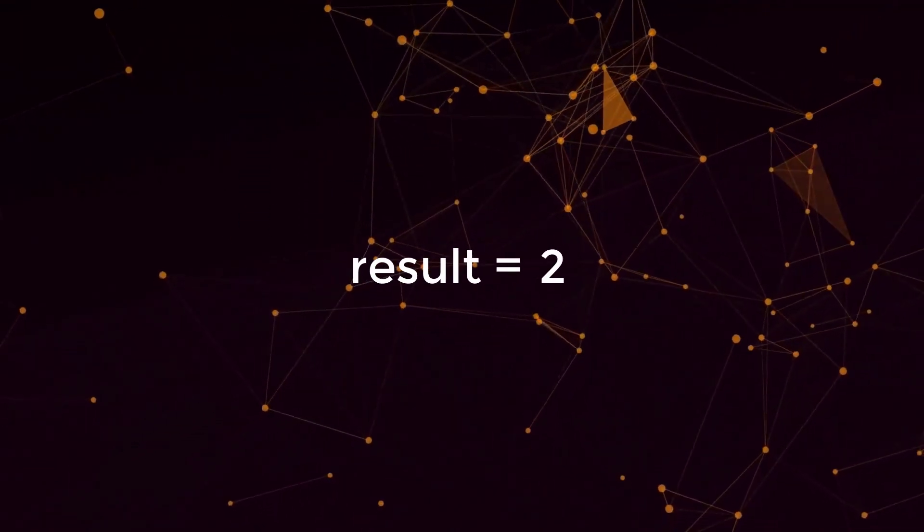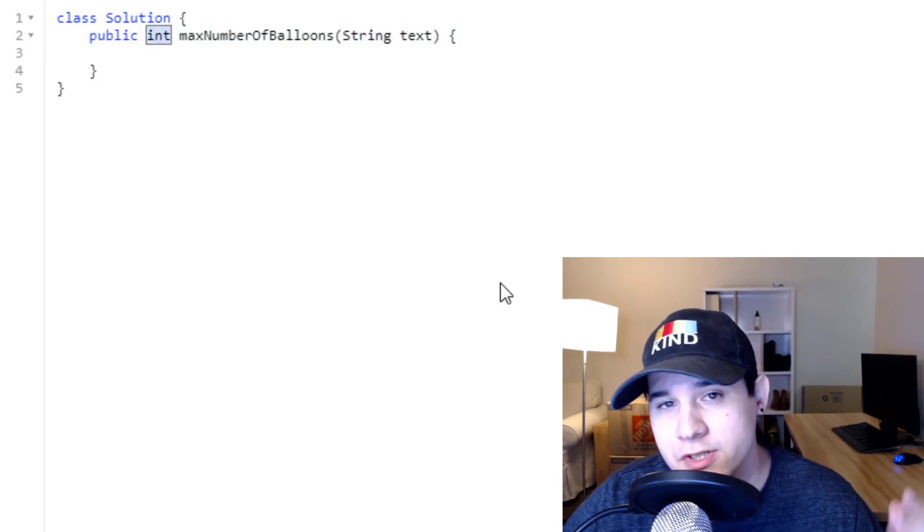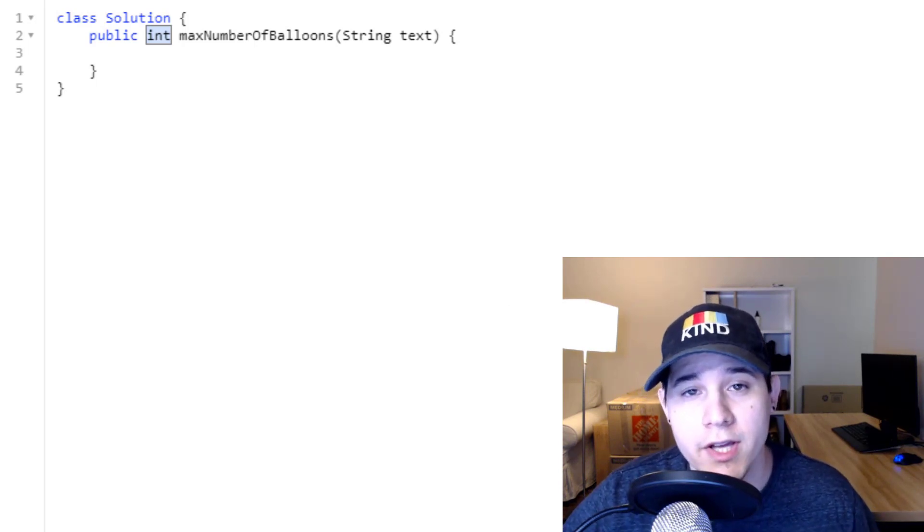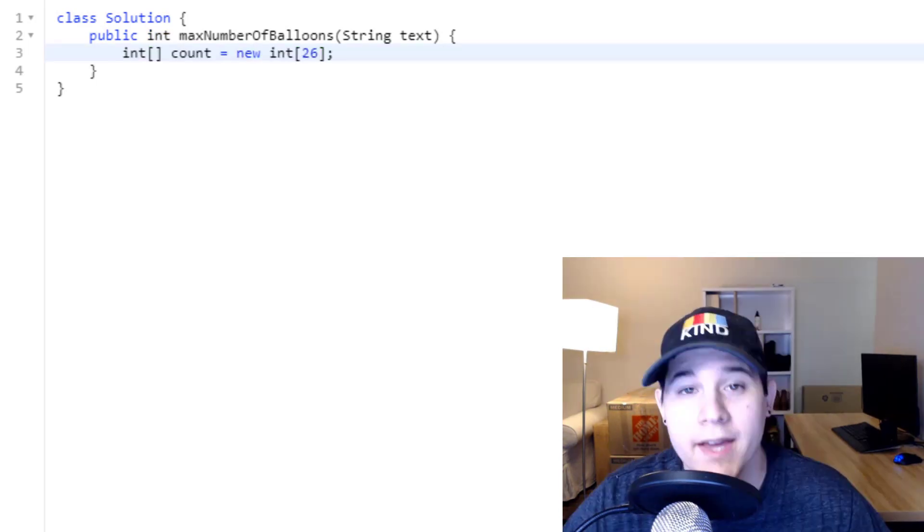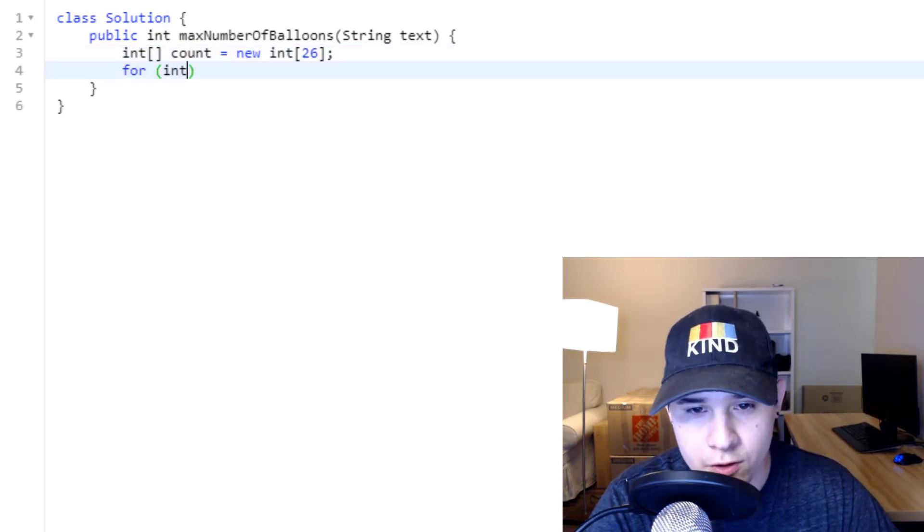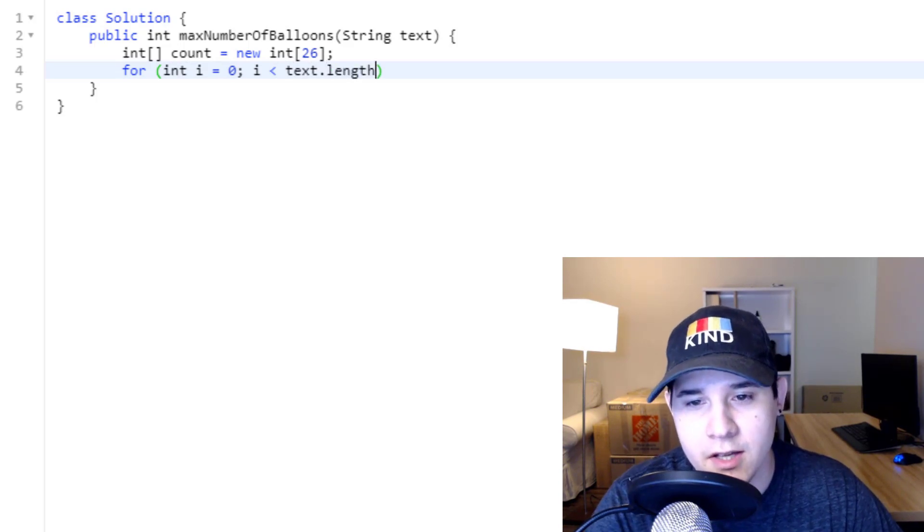So we're given a string text, and we need to return an integer, which is the number of words that can be created. So the first thing we want to do is create an integer array of size 26. And now we need to count the number of occurrences that we have for every character in our input.